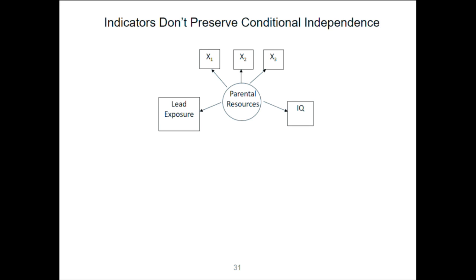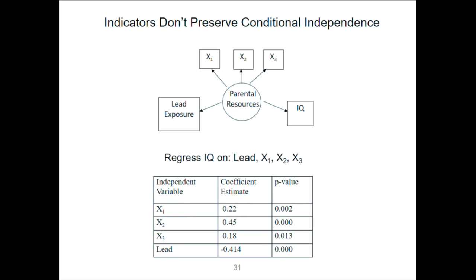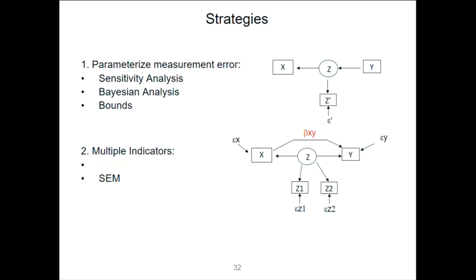What can I do instead? I can try regressing on each of X1, X2, and X3 individually rather than adding them up — no difference whatsoever. What does perhaps work is to treat the variable Z — in this case parental resources — as a latent variable and model it as such with a structural equation model. We're testing whether X has any direct effect on Y, and we're not able to measure Z but we're modeling it. In structural equation models we can estimate the parameters of this model — it's identified.